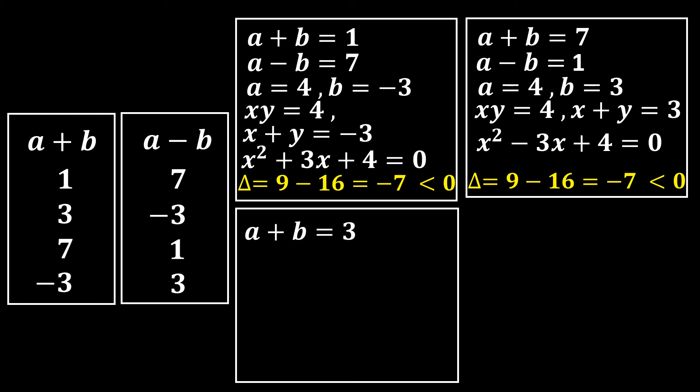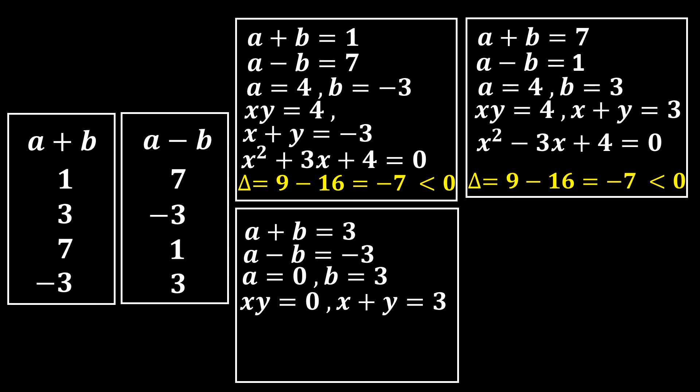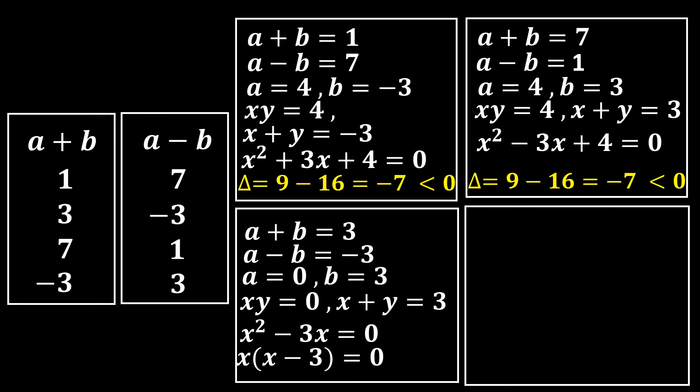System 3: a + b = 3, a - b = -3. Adding gives 2a = 0, so a = 0, and then b = 3. Thus xy = 0 and x + y = 3. The quadratic with sum of roots 3 and product of roots 0 is x² - 3x = 0, or x(x - 3) = 0.